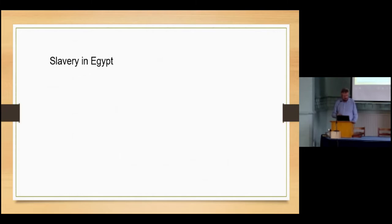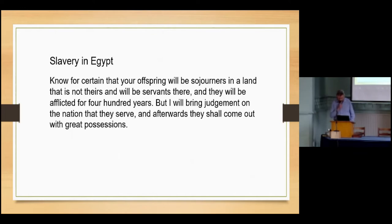Jacob, the father of the 12 sons of Jacob who became the 12 tribes of Israel, he went down into Egypt and there they remained for hundreds of years, and eventually they were made into slaves. And this had been told to Abraham that this was going to happen, where God said to him: Know for certain that your offspring will be sojourners in a land that is not theirs and will be servants there, and they will be afflicted for 400 years. But I will bring judgment on the nation that they serve, and afterwards they should come out with great possessions.